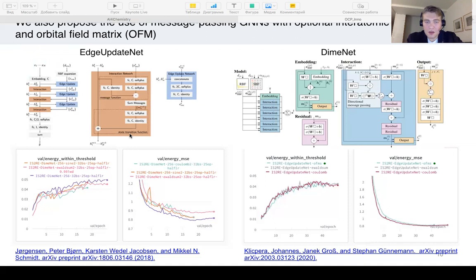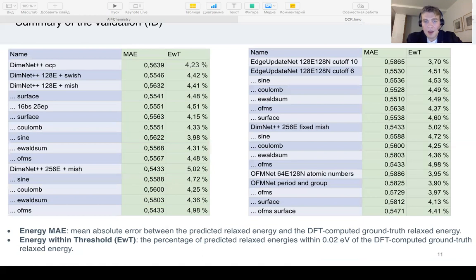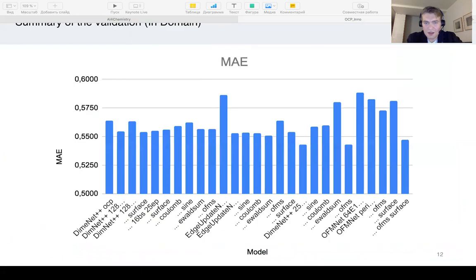We chose these architectures to be featurized by Coulomb matrices, orbital field matrix, and binary representation of catalysts. Here you can see the performance of our models on the evaluation datasets in bar charts.